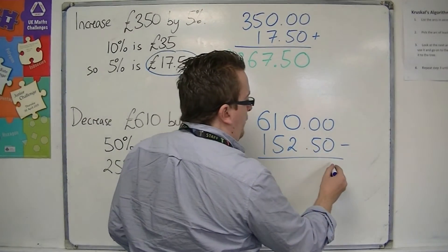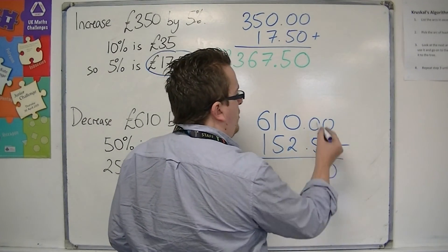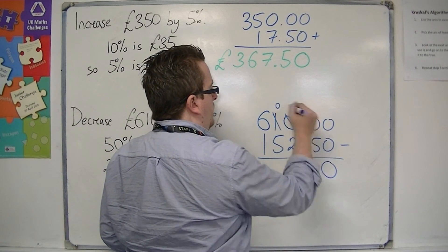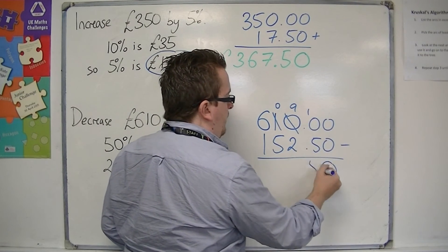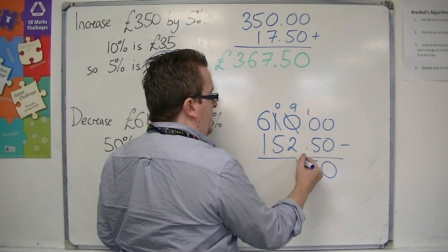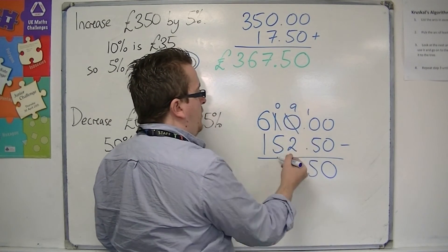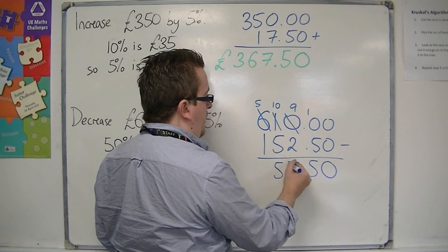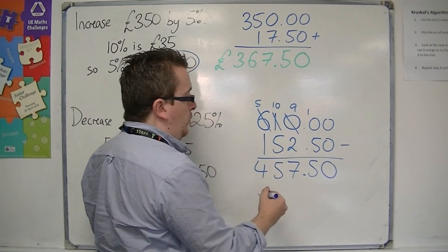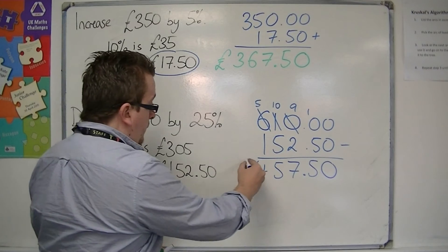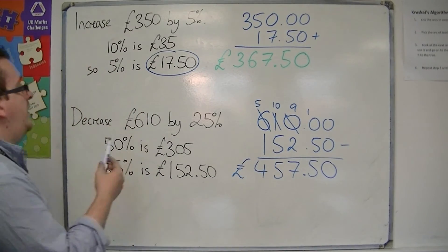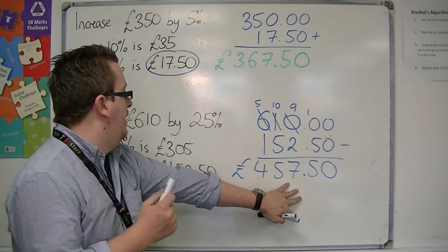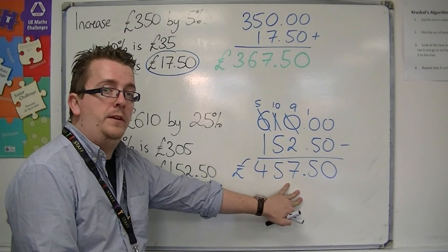So 0 take away 0 is 0. 0 take away 5 I can't do, so I'm going to have to borrow — 10 take away 5 is 5. 9 take away 2 is 7. 0 take away 5 I can't do, so 10 take away 5 is 5. 5 take away 1 is 4. So decreasing £610.00 by 25% I get £457.50.